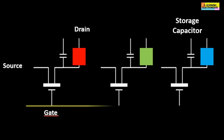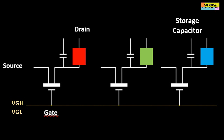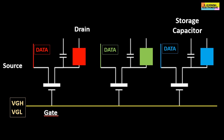The power supply of each sub-pixel works as follows: all gates placed on the same line receive the same power supply, either VGH or VGL. However, each source receives a different voltage corresponding to the analog translation of the digital color data for each sub-pixel. The storage capacitor and the drain of all TFT transistors composing the screen are connected to the same conductive track, which is the VCOM.